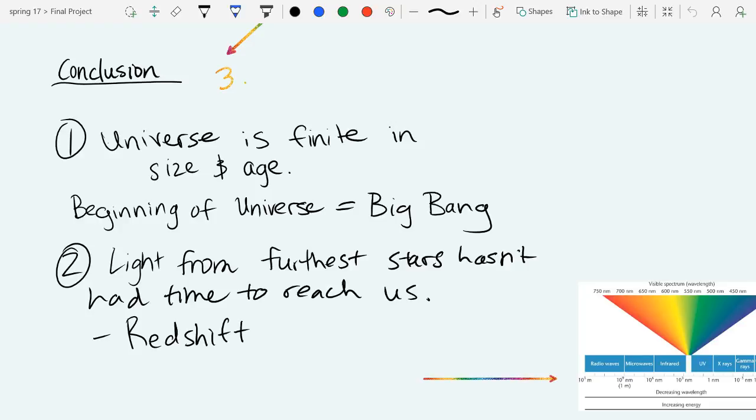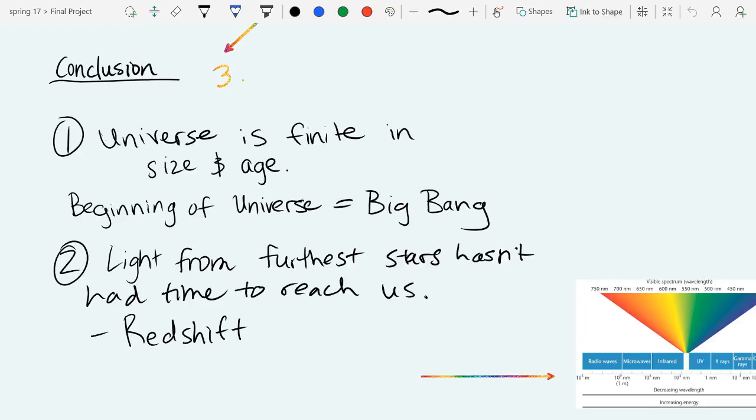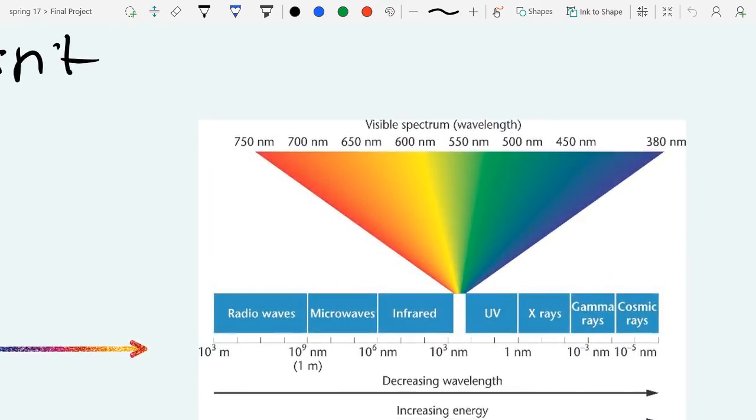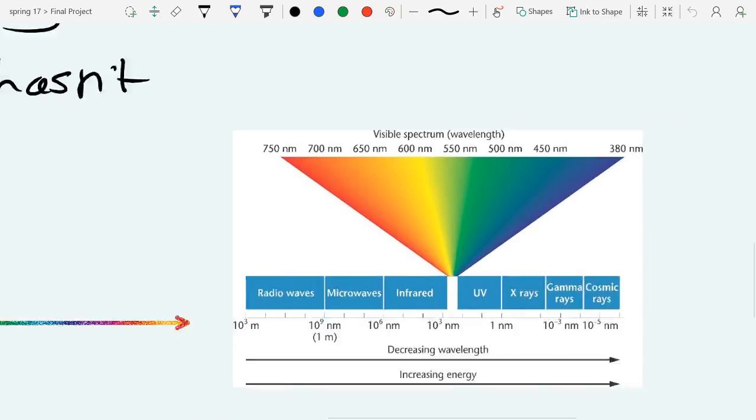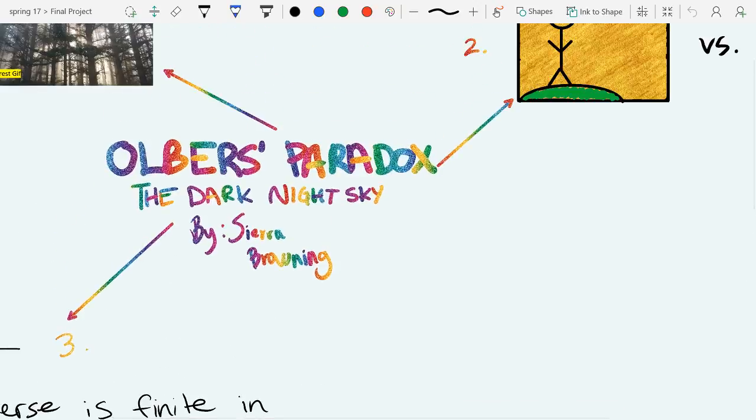The light from some further stars are redshifted into the microwave wavelengths of the electromagnetic spectrum. This light is not observable with the naked eye, thus a dark night sky. And that is Olbers' Paradox.